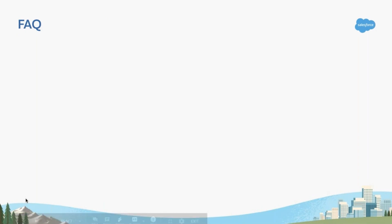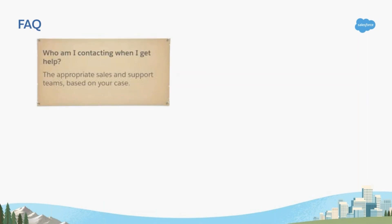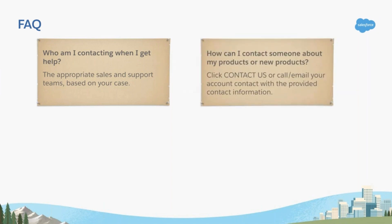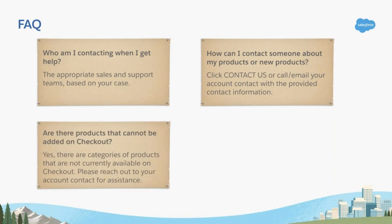Now that we've covered the top three reasons to use Checkout, let's answer a few frequently asked questions. Who am I contacting when I get help on Checkout? We'll route your case to the appropriate sales and support teams. How can you talk to somebody about your products or new products you might be interested in? You can either click Contact Us from the checkout homepage, or call or email your account contact with the contact information provided. Are there products that can't be added on Checkout? Yes, there are some categories of products not currently available on Checkout. Reach out to your account contact or click the Contact Us button for assistance.